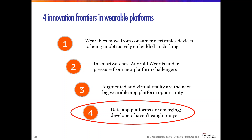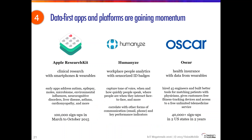Our third trend deals with wearables, and it actually splits into four different sub-trends. We've talked in the report about how wearables are becoming more part of existing clothing and jewelry, about smartwatch platforms — and in particular how Android Wear is coming under pressure — and about augmented and virtual reality. Today we'll focus on data apps from wearables. Wearables are interesting devices — diverse, beautiful, fashionable — but where it gets really interesting is in the data that can come from them.